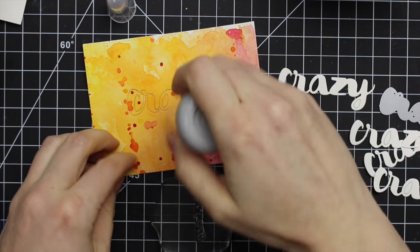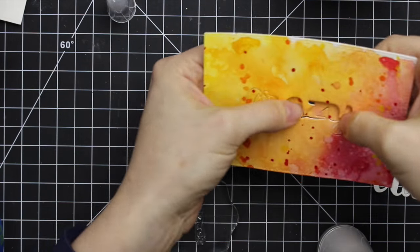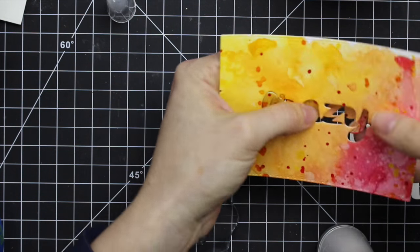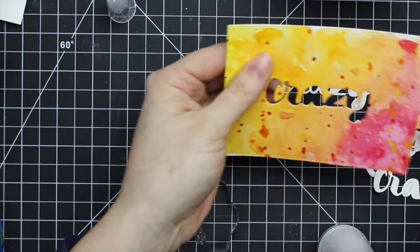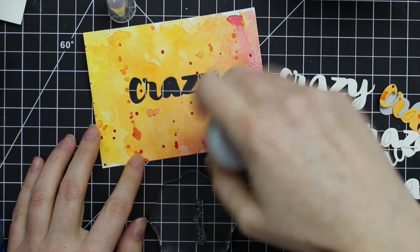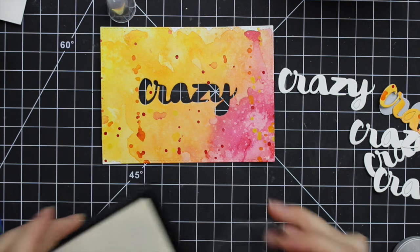And then I'm using the Avery L Simply Said Crazy dies and stamps for these. So I die cut the word crazy right from this watercolor piece and then popped it out because I didn't want to end up damaging it. And then I was coating it with my anti-static powder tool because I plan on heat embossing the rest of the sentiment.